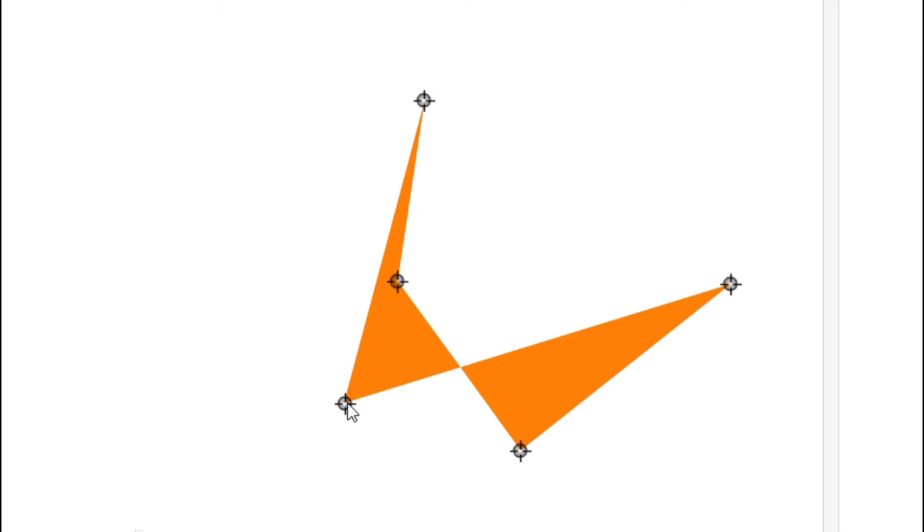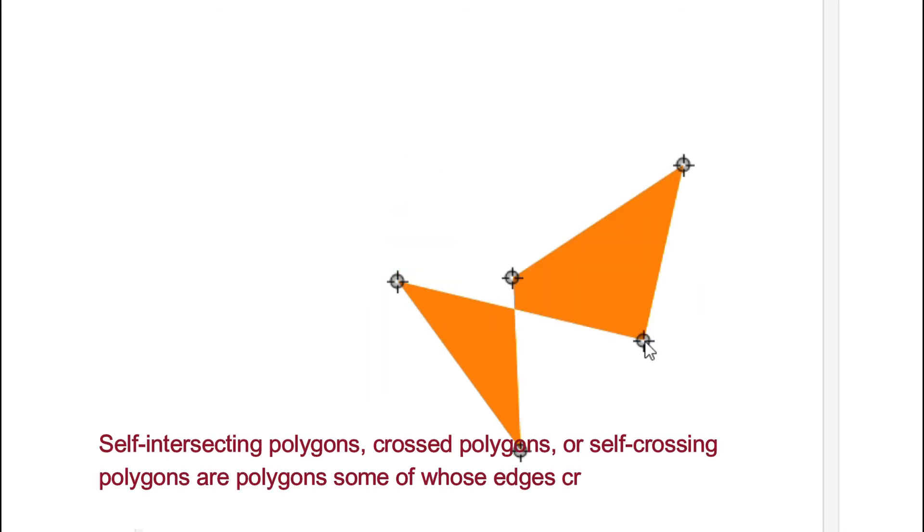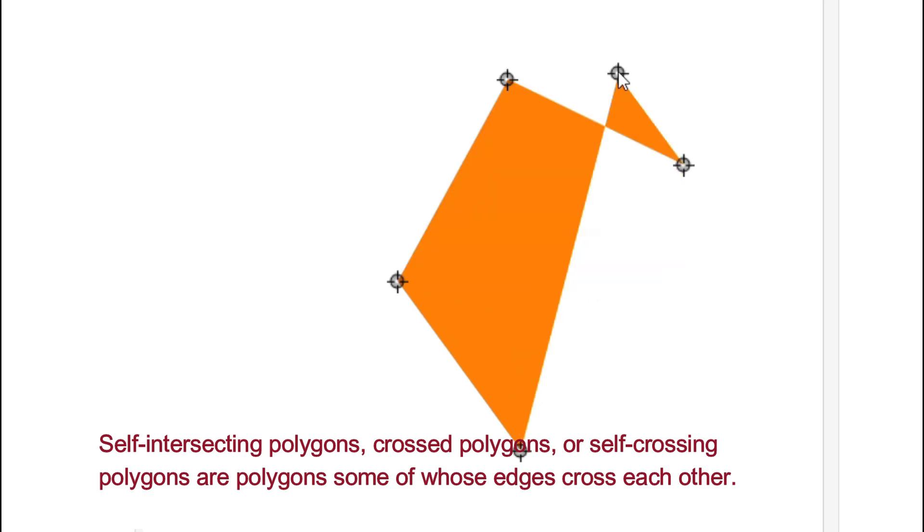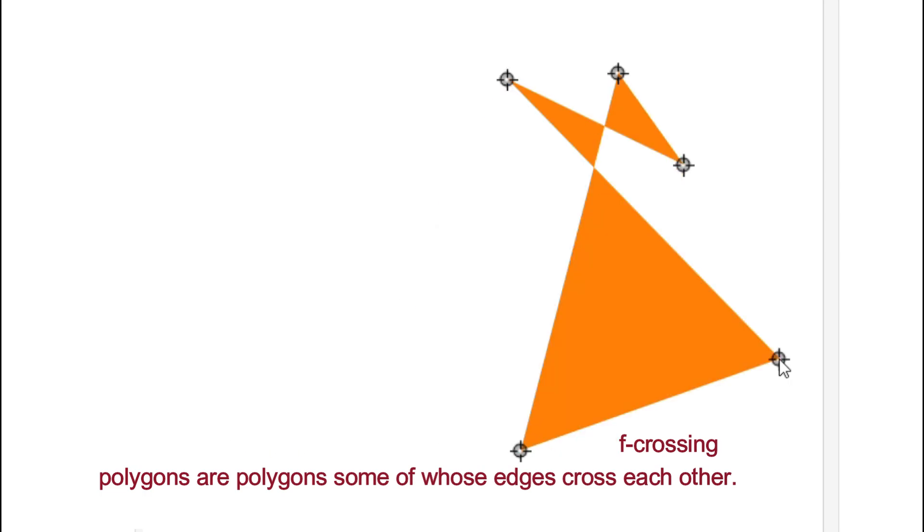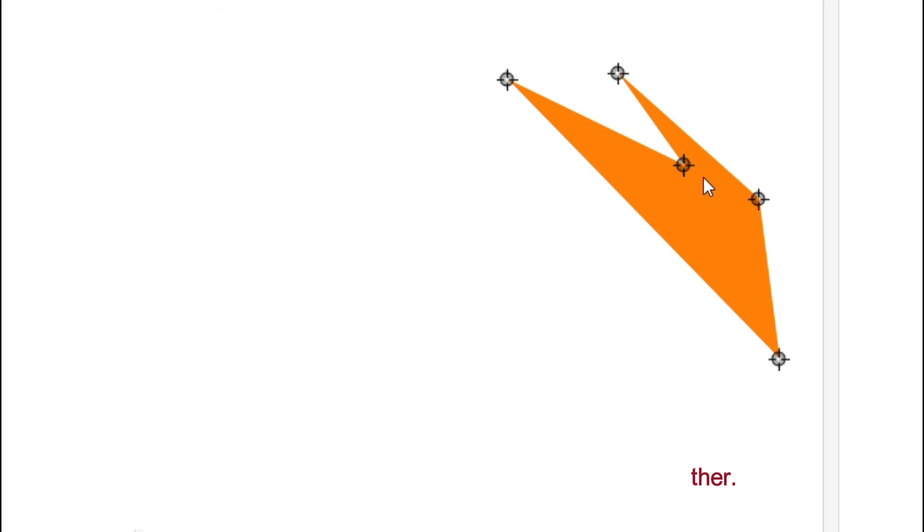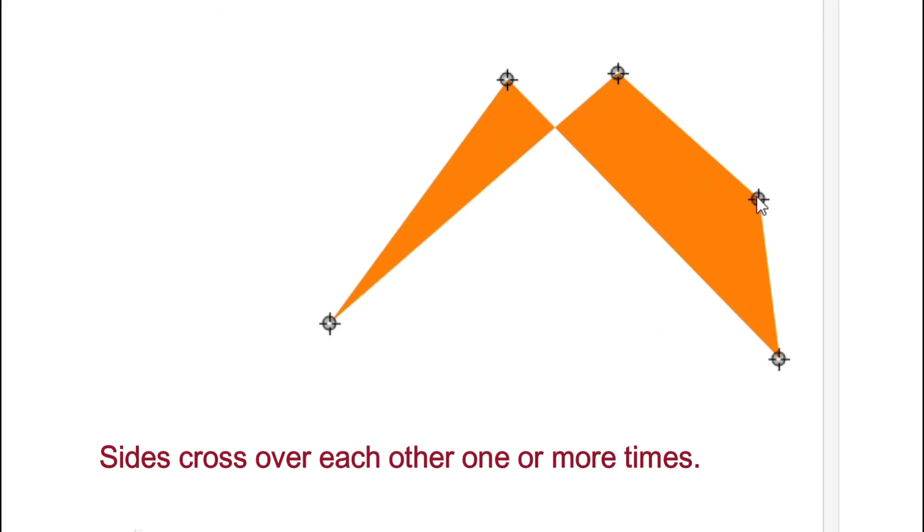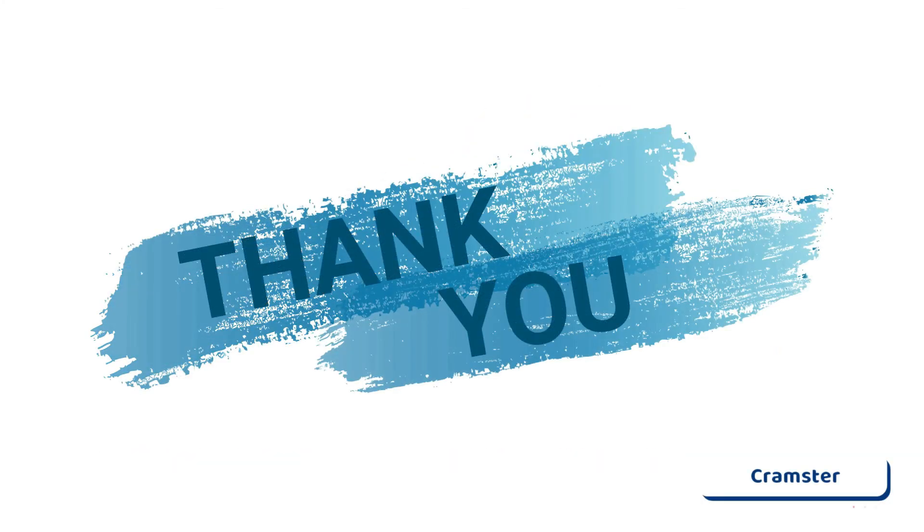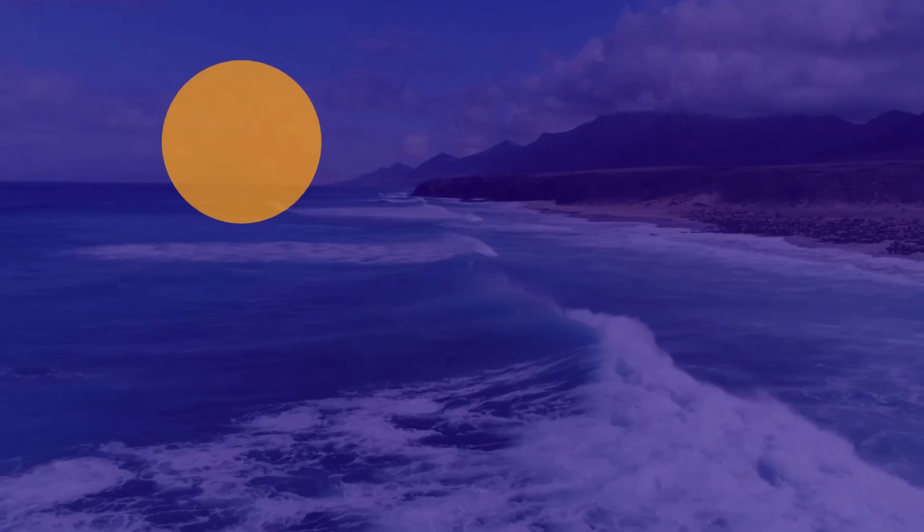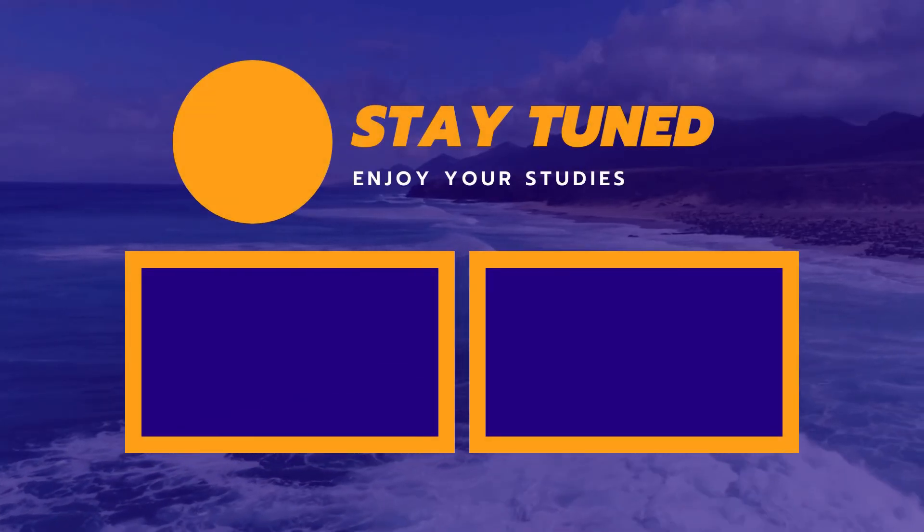So we can say that self-intersecting polygon, or crossed polygon, or self-crossing polygon, are polygons some of whose edges cross each other. Sides can cross over each other one or more times. Thank you.